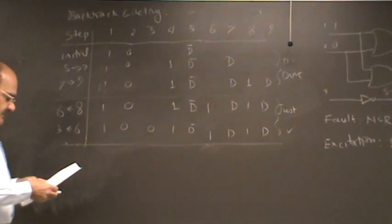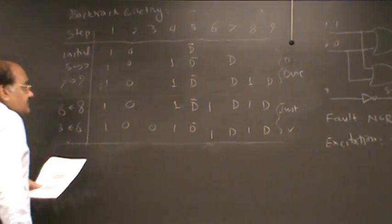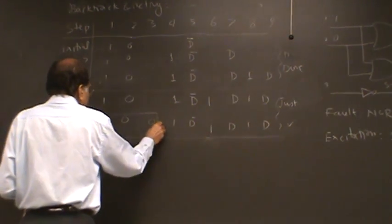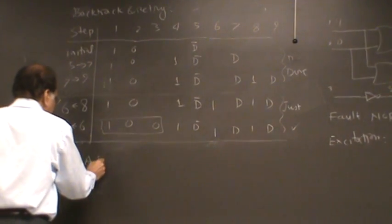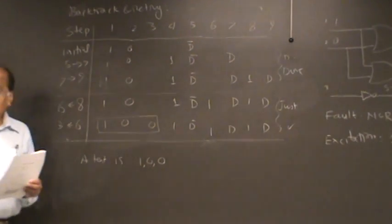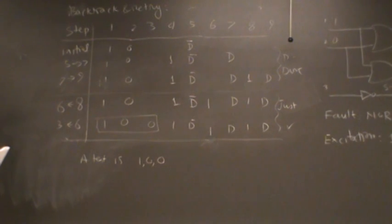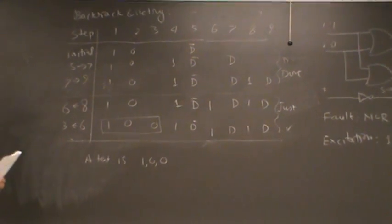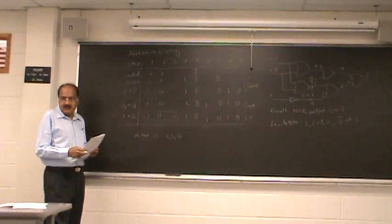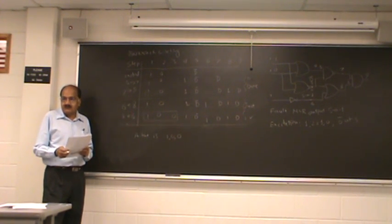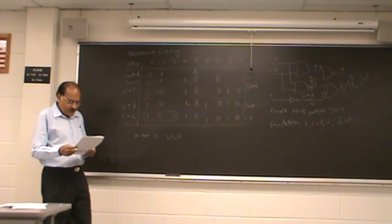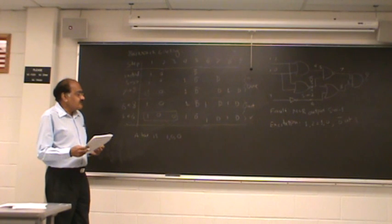And hence we have a test, and the test is on lines one, two, and three. But we don't know if this is the only test. But the promise of the algorithm is that if there is a test you will find it. It doesn't claim that you are going to find all the tests. You will find all the tests if you keep working on it, but our assumption is that once you have found a test we stop. So this is the famous D algorithm.